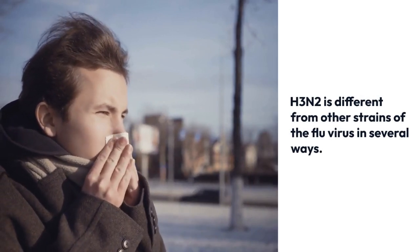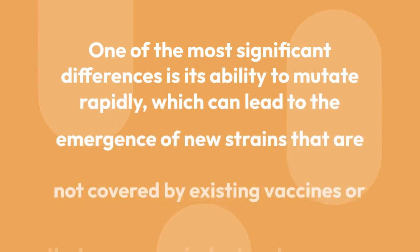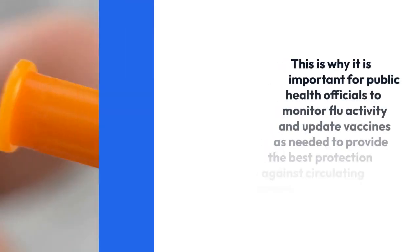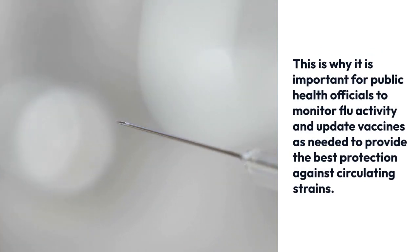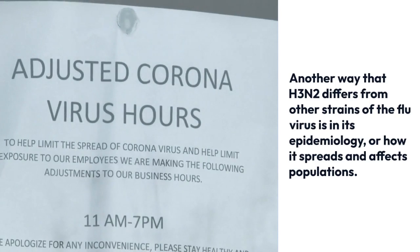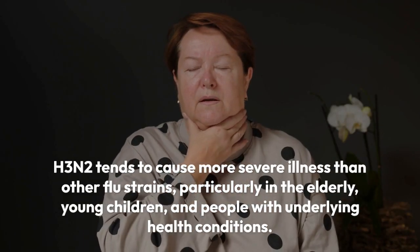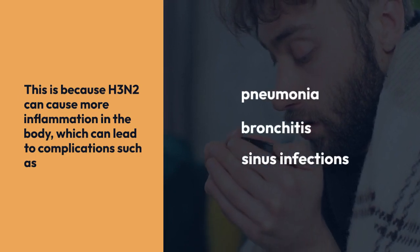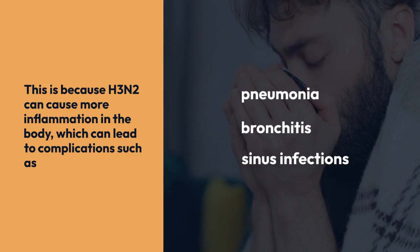H3N2 is different from other strains of the flu virus in several ways. One of the most significant differences is its ability to mutate rapidly, which can lead to the emergence of new strains that are not covered by existing vaccines or that are more virulent and can cause more severe disease. This is why it is important for public health officials to monitor flu activity and update vaccines as needed. H3N2 tends to cause more severe illness than other flu strains, particularly in the elderly, young children, and people with underlying health conditions, because H3N2 can cause more inflammation in the body, which can lead to complications such as pneumonia, bronchitis, and sinus infections.